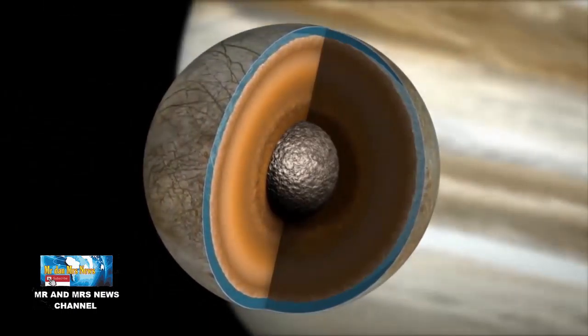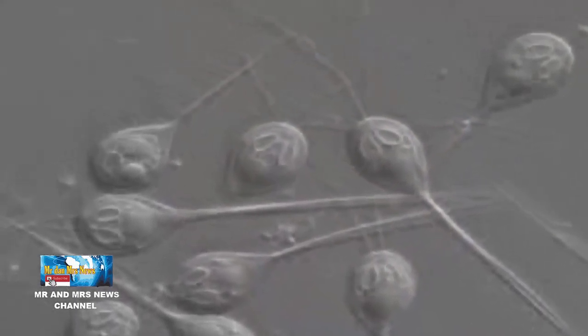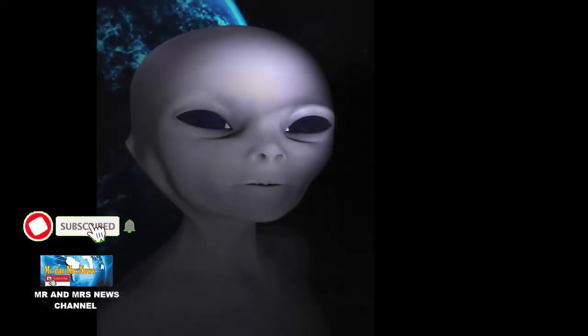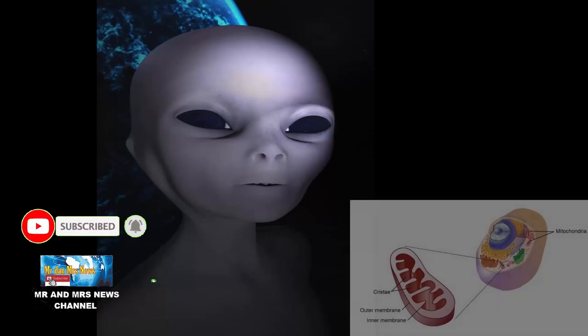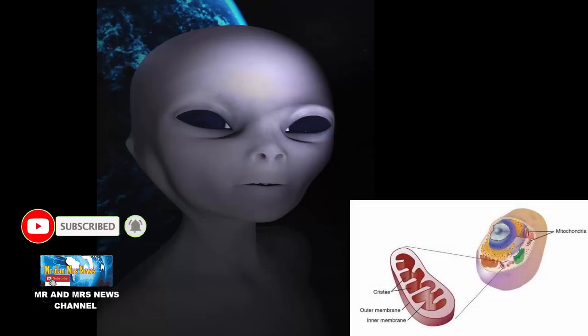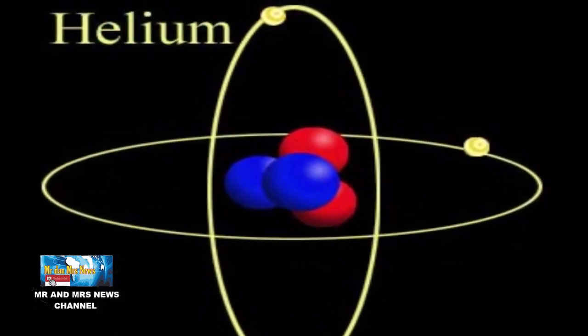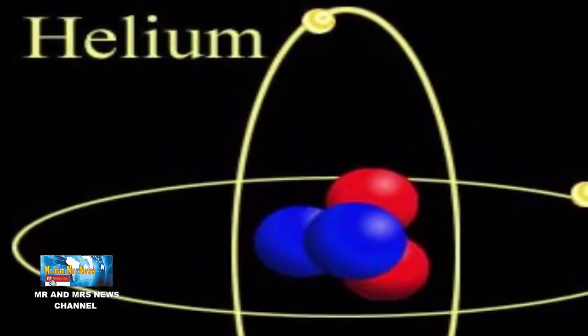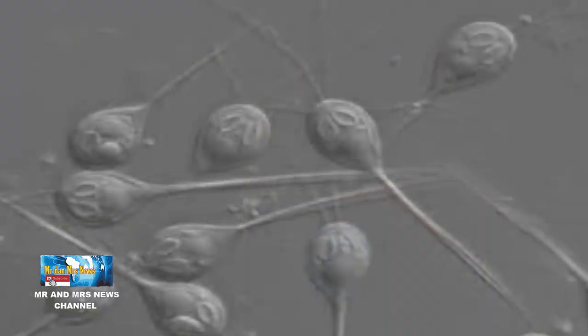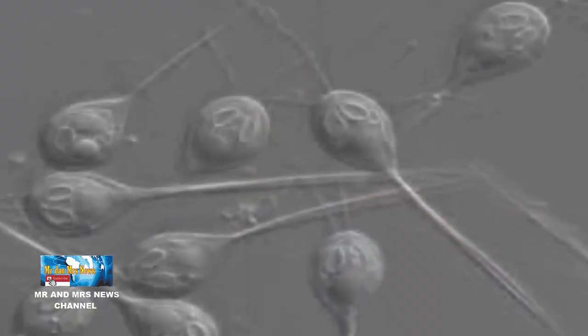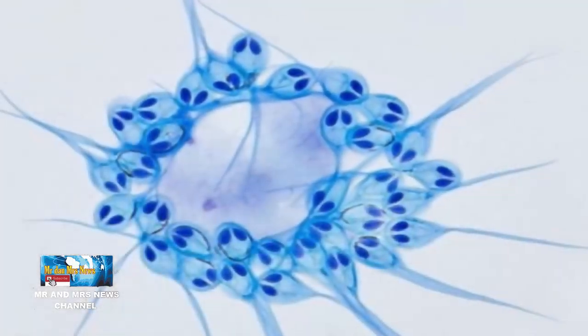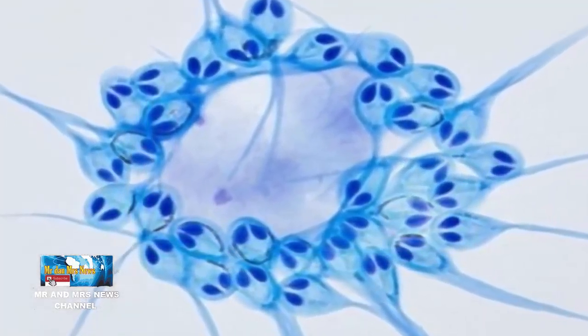Beberapa waktu yang lalu, ilmuwan meneliti bakteri E. coli dan ragi untuk melihat apakah makhluk hidup mikro tersebut bisa hidup di lingkungan yang berbeda. Ternyata, mikroba seperti itu bisa bertahan hidup tanpa oksigen. Saat ditempatkan di lingkungan berisi hidrogen murni atau helium murni, mereka berhasil tumbuh meski dengan kecepatan yang lebih lambat dari biasanya. Penemuan ini mengindikasikan bahwa saat mencari organisme di tempat lain di alam semesta, kita mungkin harus mempertimbangkan tempat yang tidak mirip seperti bumi.